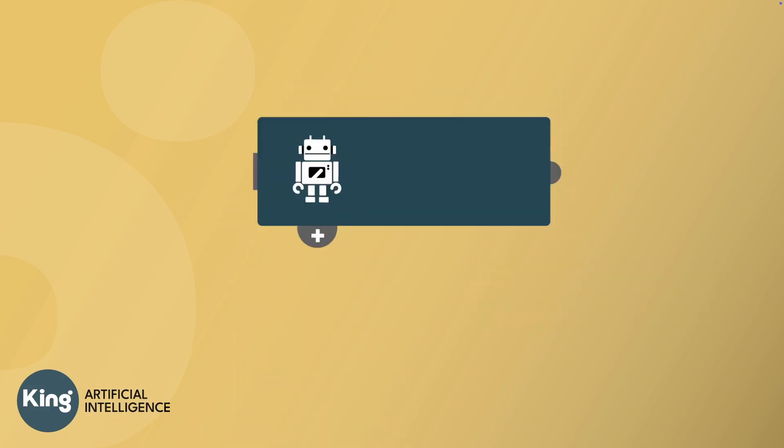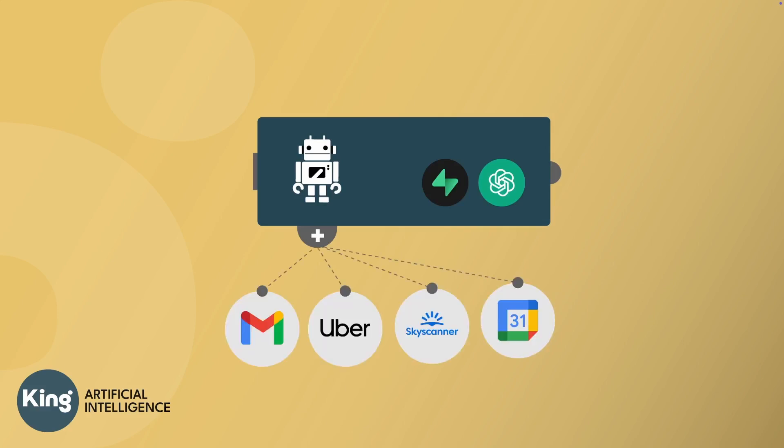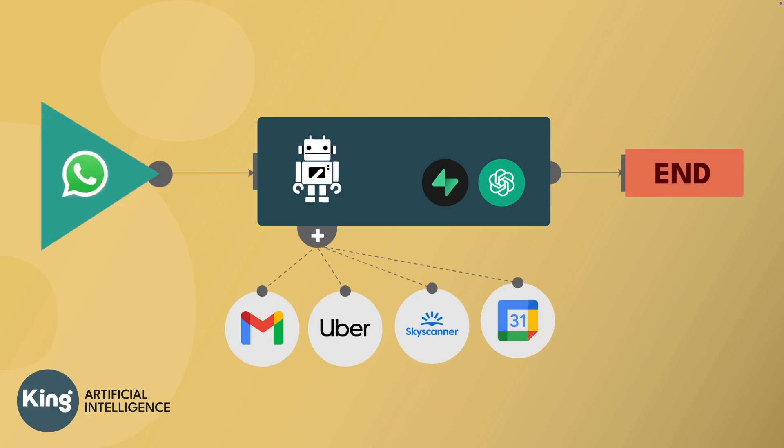We used a robot to explain this concept, but in reality, an AI agent is a software program. It has an LLM to understand human language, memory to store what it learns, and tools like search, calendar, travel apps, and email to interact with the outer world, along with ways for humans to communicate with them. AI agents can decide what tools they need to use, break big tasks into smaller steps, adapt when things don't go as expected, and remember what worked well to do better next time.